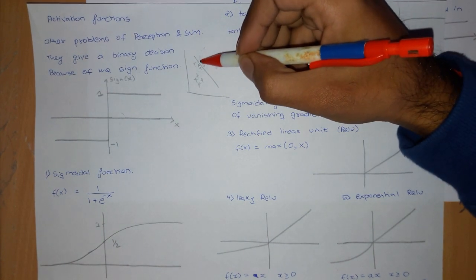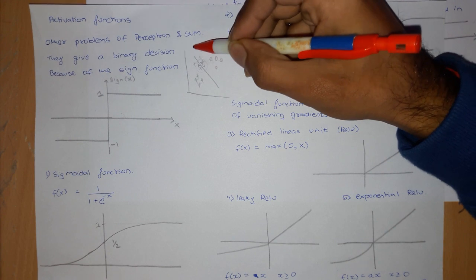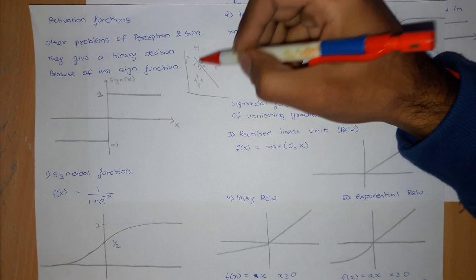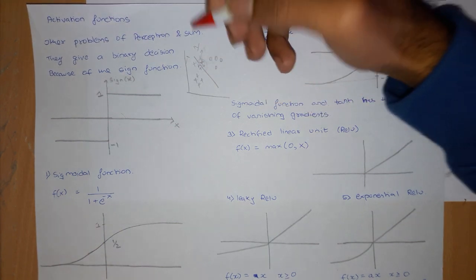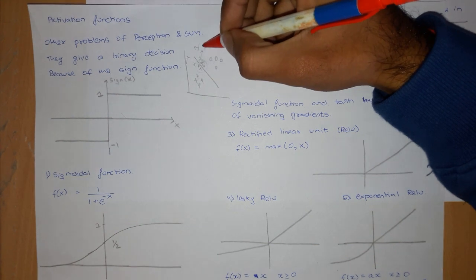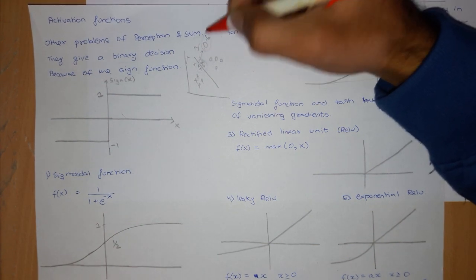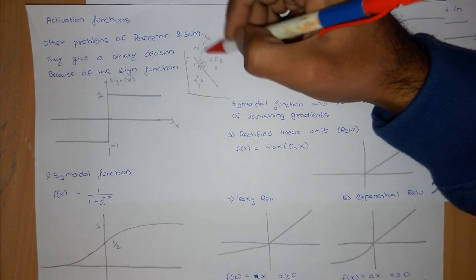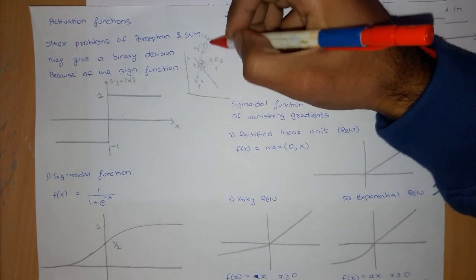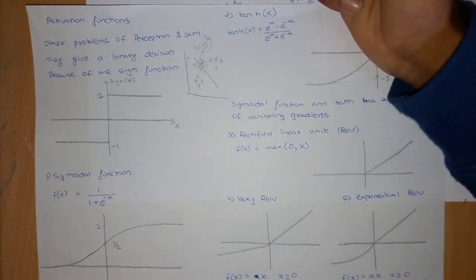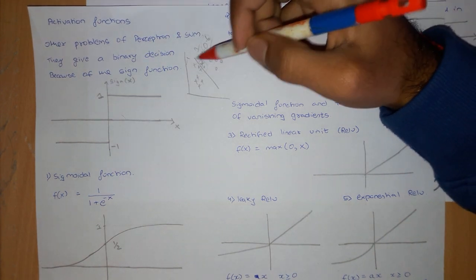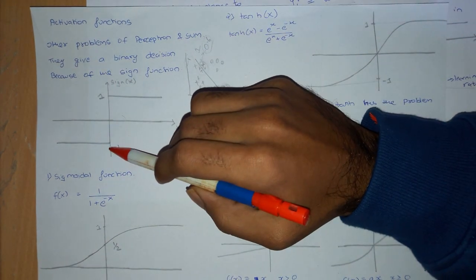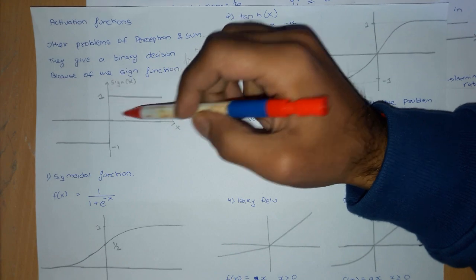Instead of labeling a particular sample as 1 or minus 1 as in the case of perceptron, you can let this particular example have some output — say 0.6 — and then we will try to do something with this 0.6 in the next videos. The problem is that we are getting a binary decision, either minus 1 or plus 1.